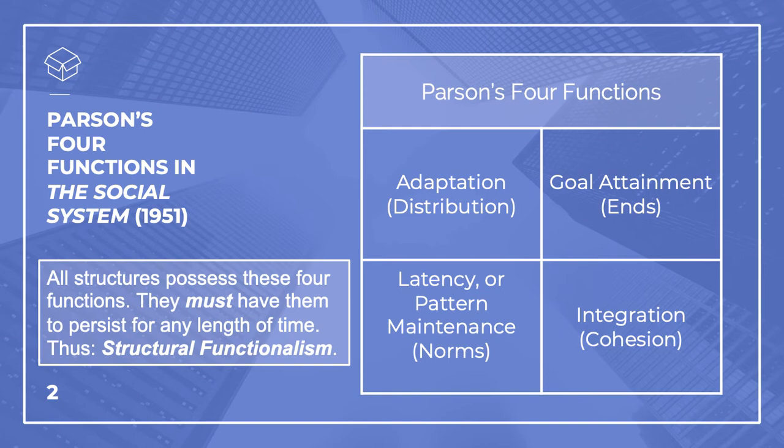4. Latency or pattern maintenance. Think here of codes to be acted through, like language or a shared cultural symbolic system. This we call latency — in the background, not yet realized — but it's essential to action. L is for latency. What matters for us is that agency and structure are reproduced in all action systems that meet these four requirements. The abstract language here also explains why most sociology undergrads shiver when they hear the word structural functionalism. We can ground the four structural functions in Parsons' medical sociology.